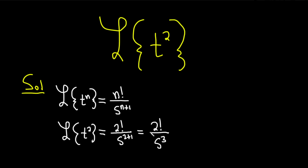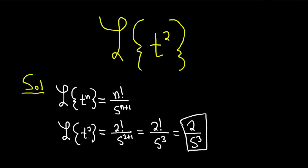So it's just a good memory trick. And then this is equal to — 2 factorial is just 2 — so this is 2 over s cubed. And that would be the answer, the Laplace transform of t squared. Hopefully this has been helpful to you. Until next time, good luck.